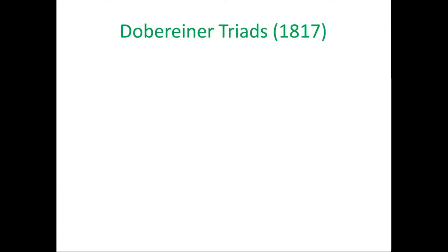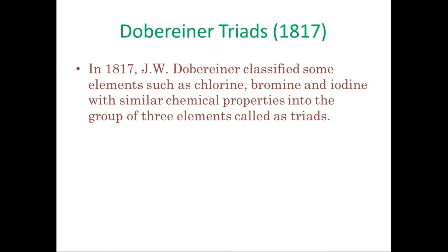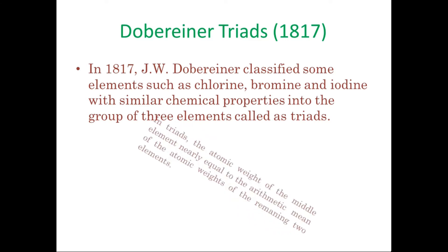In 1817, J.W. Döbereiner, a scientist, calculated and classified elements into triads. In a triad, the atomic weight of the first element and the third element are averaged, and that average equals the atomic weight of the second element.